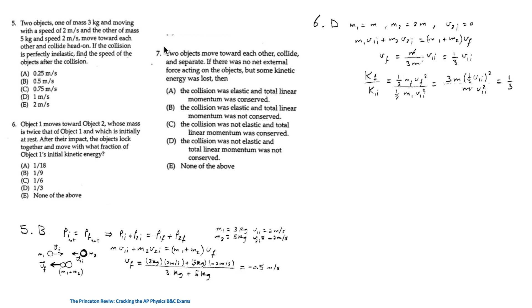For question 7, two objects move toward each other, collide and separate. If there was no net external force acting on the object, but some kinetic energy was lost, then the answer is C, which is that the collision was not elastic because some of the kinetic energy was lost. But the total linear momentum is conserved. This is because the net external force on the system is zero, and so the total linear momentum of the system remains unchanged or constant. So it's conserved.